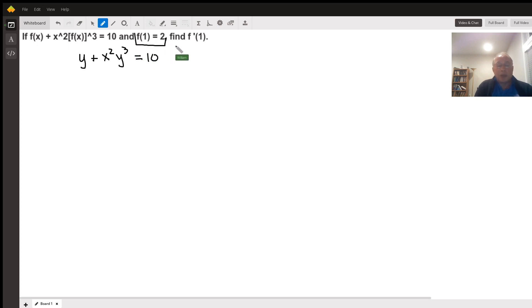is just a data point. That tells us that x equals 1, y is going to be equal to 2. So it's a point that's on the curve, 1, 2.